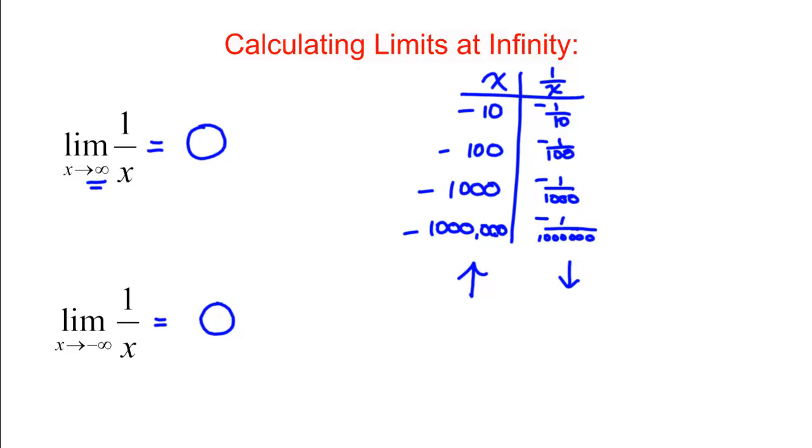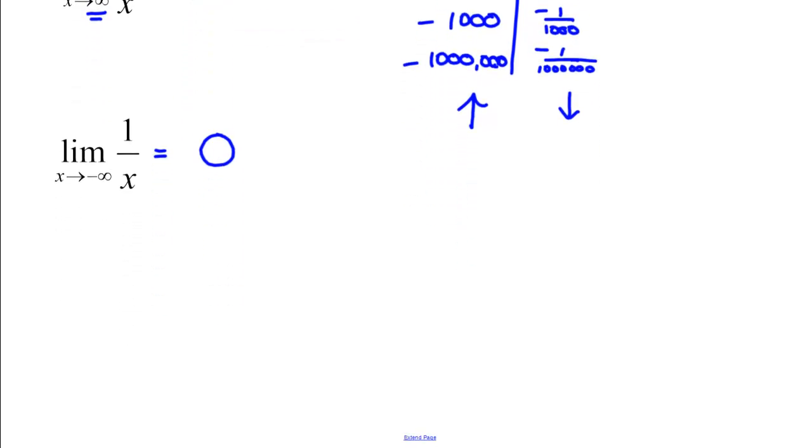It gets more complicated if the function is more complicated. If we're asked to find something like the limit as X goes to infinity of X over 5X squared minus 11 times sine of X, now we have no idea what to do.